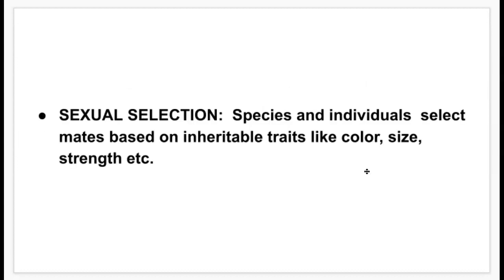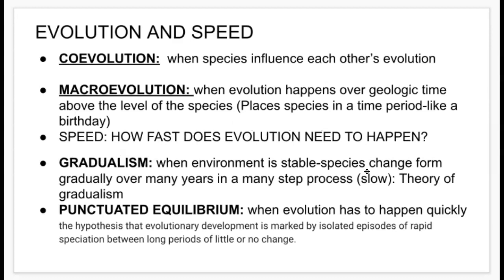Sexual selection: species and individuals select mates based on inheritable traits like color, size, and strength. As a recap — co-evolution is when species influence each other's evolution, like insects and flowering plants, specifically the honeybee Apis mellifera with angiosperms. Macroevolution is when evolution happens over geological time above the level of a species. Gradualism is when the environment is stable and species change gradually over many years in a step-by-step process.